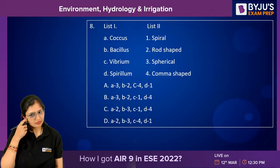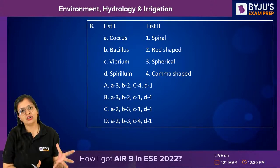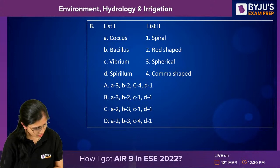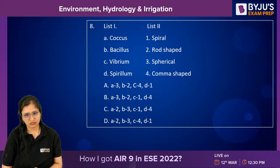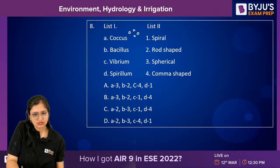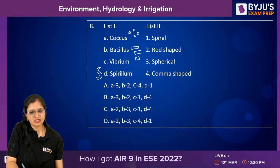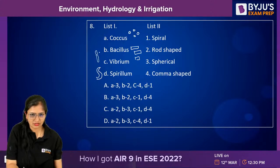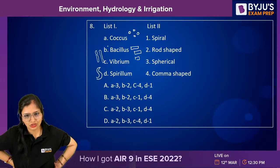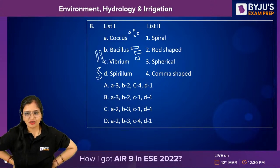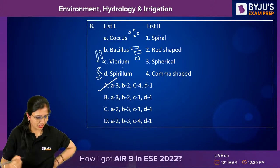Matching microorganism names with shapes: Coccus is spherical (ball-shaped), Bacillus is rod-shaped, Spirillum is spiral-shaped, Vibrio is comma/curved shaped. So the correct matching order is 3, 2, 4, 1.